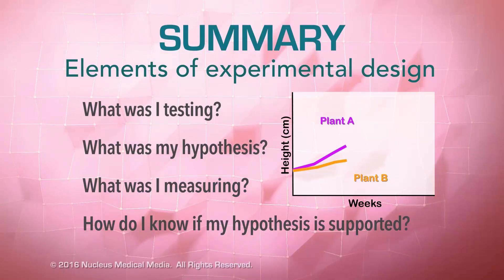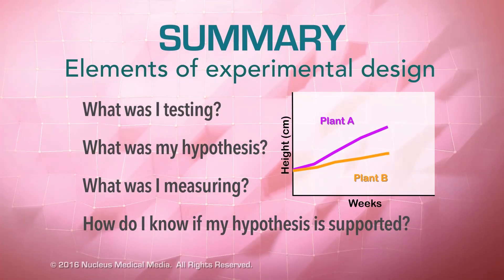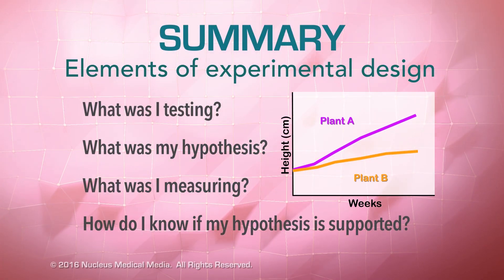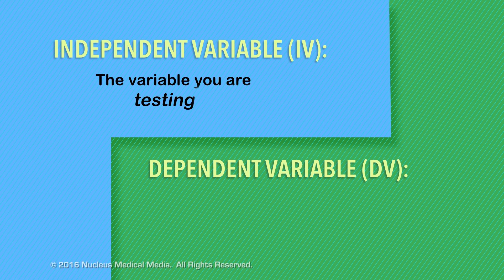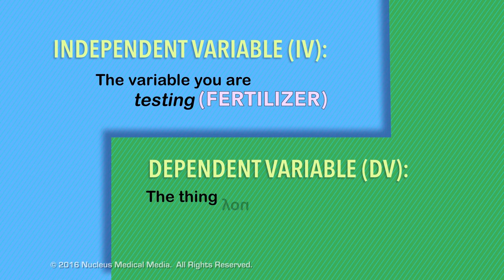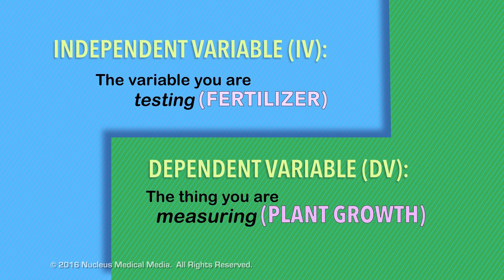How do you know if the results of the experiment support your hypothesis? Well, if your hypothesis is true, you would have seen that the plant that got the fertilizer actually did get bigger than the plant that didn't get any fertilizer. The variable you were testing, in this case the fertilizer, is called the independent variable. And the thing you were observing, measuring, and expecting to change because of that independent variable was plant growth. In this experiment, plant growth is the dependent variable. We'll go over independent and dependent variables in more detail in another video.